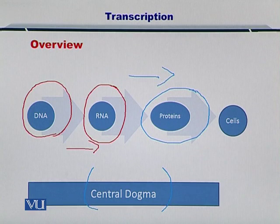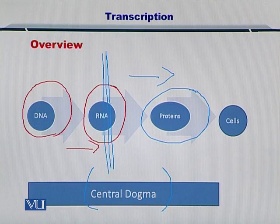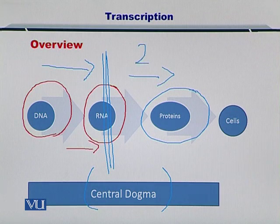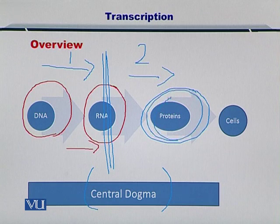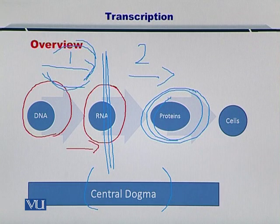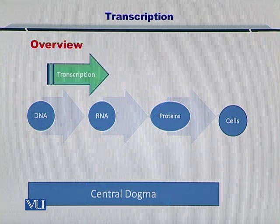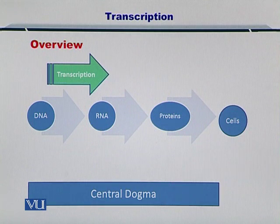This entire process is a part of what we call the central dogma. The central dogma can be broken into two components: the first part being the relaying of information from the DNA to the RNA, and the second part being the transfer of this information from the RNA to the proteins. In this module, we are going to focus on the first part, which is called transcription. This process is responsible for converting the DNA bases into the RNA bases.